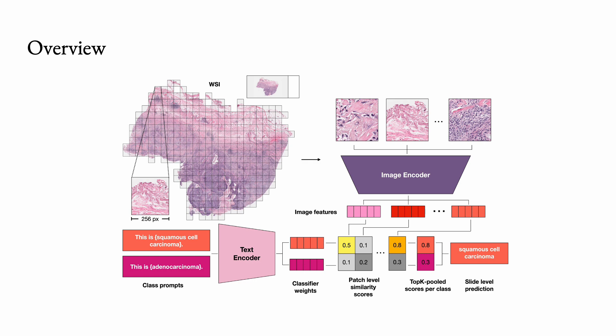Inspired by multiple-instance learning, in this work we propose MI0 to enable zero-shot transfer of pre-trained visual language encoders to gigapixel histopathology images. We curated a diverse dataset of domain-specific image-text pairs and showed that through unsupervised pre-training, our best model can achieve non-trivial zero-shot transfer capabilities on three separate benchmarks for histopathology whole-site image classification.